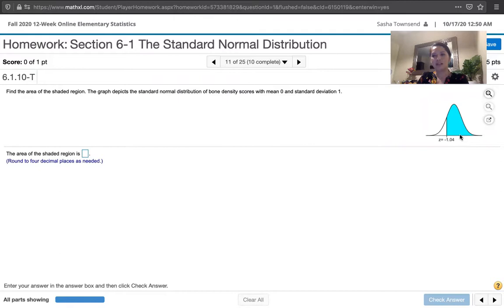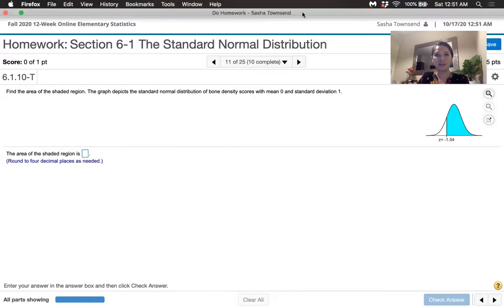So our tables only contain areas to the left so we're going to have to use the fact that the total area under this curve is one in order to find the area to the right. I'm going to show you my work on this piece of paper and then we'll look at the table of z-scores on the computer and then we'll use that to find the answer.